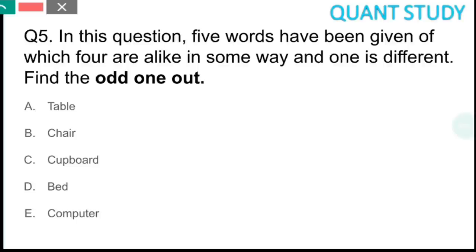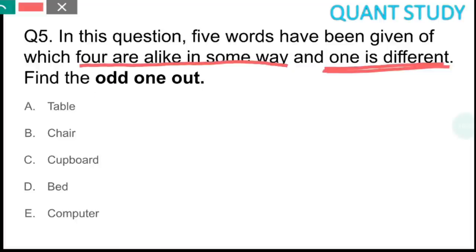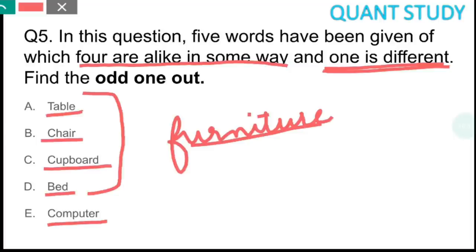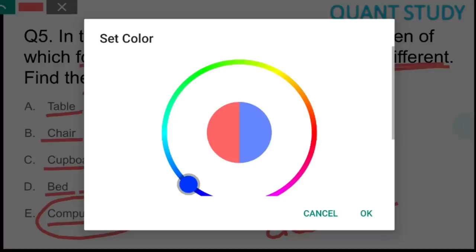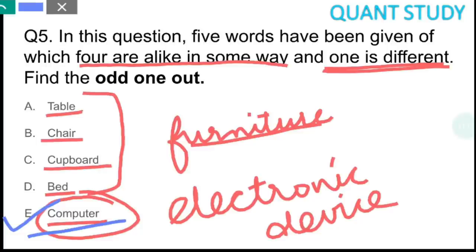Question 5 is based on odd one out. Five words are given — table, chair, cupboard, bed, and computer — of which four are alike in some way and one is different. Table, chair, bed, and cupboard are all types of furniture. However, computer is an electronic device, not furniture. So the odd one out is option E, computer.